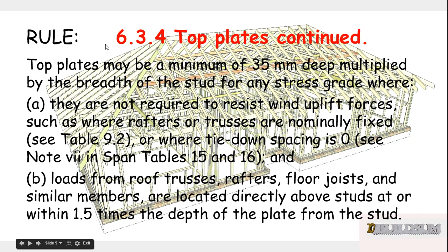Rule 6.3.4 says the top plates may be a minimum of 35mm deep multiplied by the width of the stud, for any stress grade. So if your stud is 70 then your plate has to be 70 wide; if your stud is 90 then your plate has to be 90 wide. They are not required to resist wind uplift forces where rafters or trusses are normally fixed, or where tie-down spacing is zero — see note 7 in span tables 15 and 16 — and loads from roof trusses, rafters, floor joists and similar members are located directly above studs or within 1.5 times the depth of the plate from the stud.